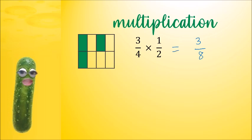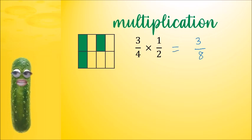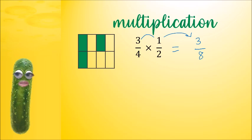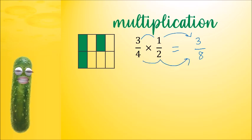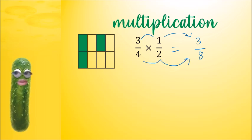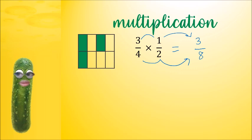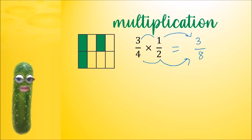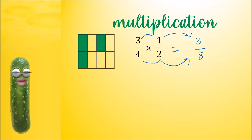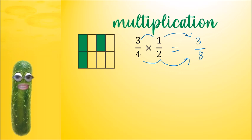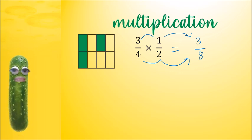Let's check if our method still works. 3 times 1 is 3, and 4 times 2 is 8. So when we multiply fractions, all we have to do is multiply the numerators and multiply the denominators. In other words, all you have to do is multiply the top numbers together and multiply the bottom numbers together.